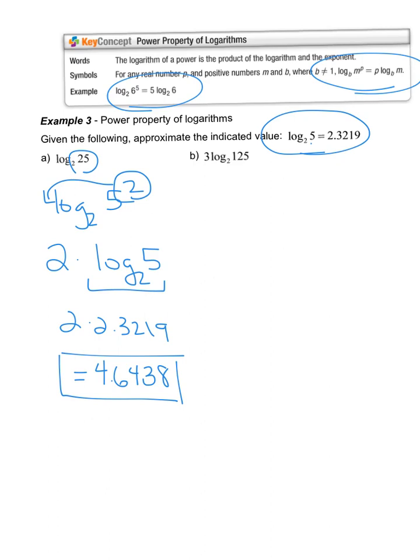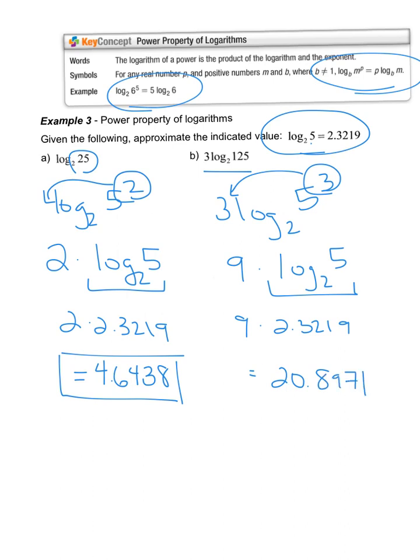Notice, every single problem we've done today, we have not reached for a calculator to just type it in and use our log base program. That's cheating. We're going to use our properties to approximate what we're given. These types of questions will be on the no calculator portion of your next quiz. You need to be able to come up with these on your own. So thinking about this one, log base 2 of 125. We know that 125 is 5 cubed. So just like before, our power comes out front. 3 times 3 is 9 times log base 2 of 5. Then we substitute in the value, 2.3219 times 9. And we wind up with 20.8971.